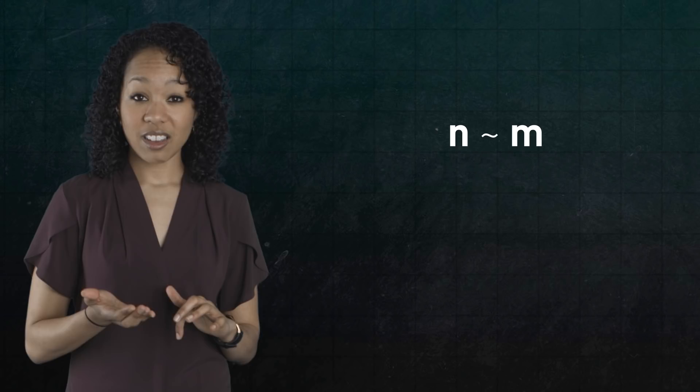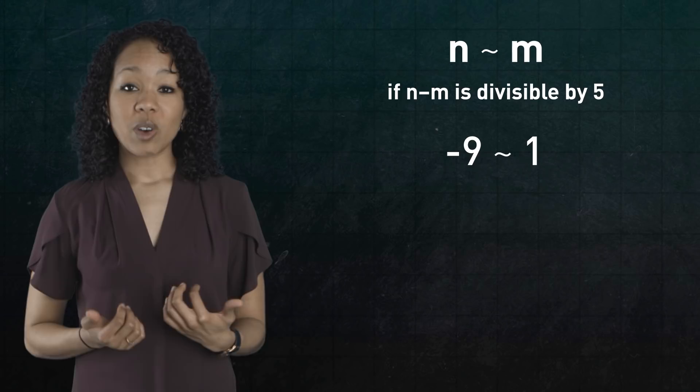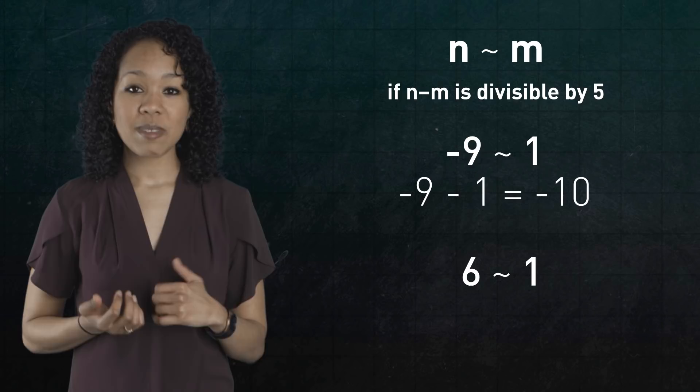So let's lay down some terminology. Two integers relate to each other, written with this tilde, if their difference is a multiple of 5. So negative 9 relates to 1 because negative 9 minus 1 is negative 10 and 6 relates to 1 because 6 minus 1 is 5 and so on.